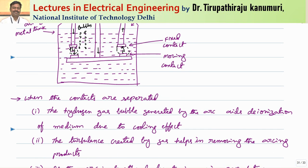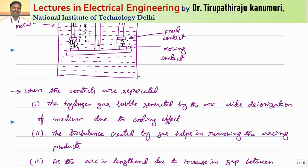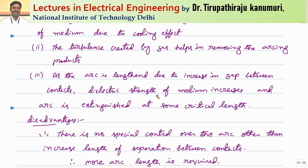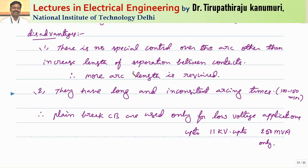Since there is no specific mechanism to extinguish the arc at a shorter distance, more length is required — that is the disadvantage of the plain type circuit breaker. When the contacts are separated, the hydrogen gas bubble aids deionization due to cooling and turbulence, removing arcing byproducts. As the arc is lengthened by the increasing contact gap, the dielectric strength of the medium increases and the arc is extinguished at some critical length. Because there is no special control over the arc, more contact separation distance is required, and the circuit breaker cannot be used for recloser applications.